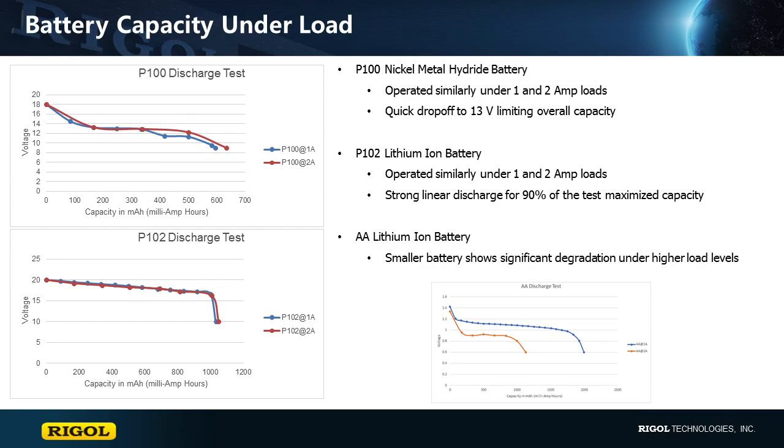After completing all of our tests on different batteries and compiling the results, we can see that the 18V batteries, P100 and P102, are both likely designed to operate between 1A and 2A of constant current load. As the tests show similar operating conditions under both of these tests.